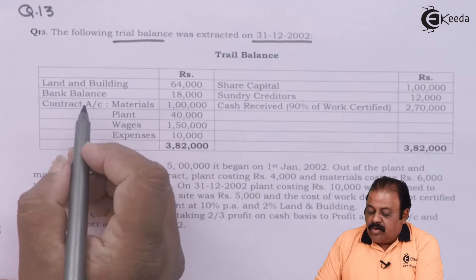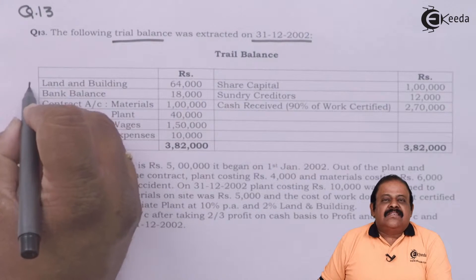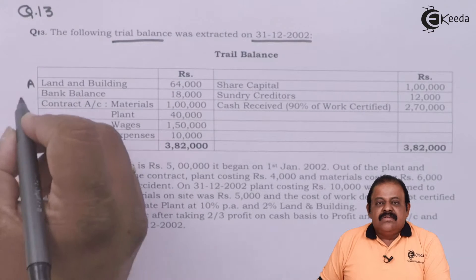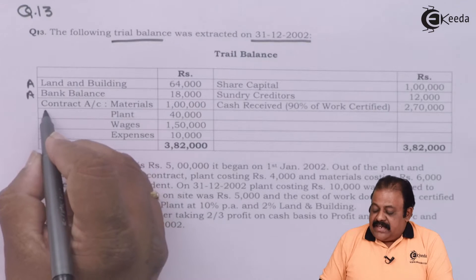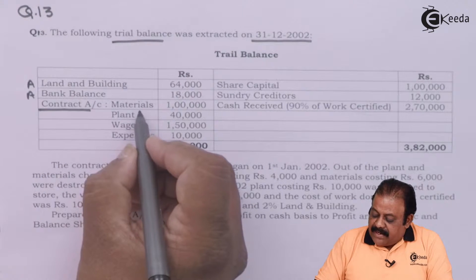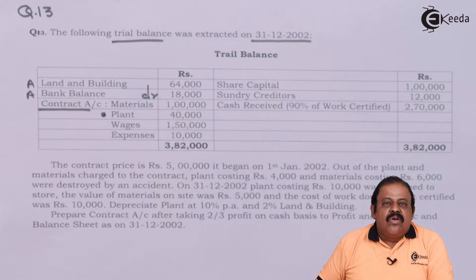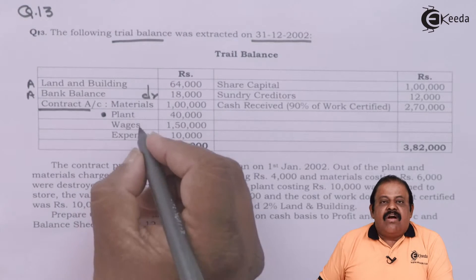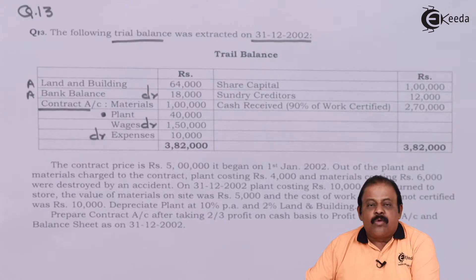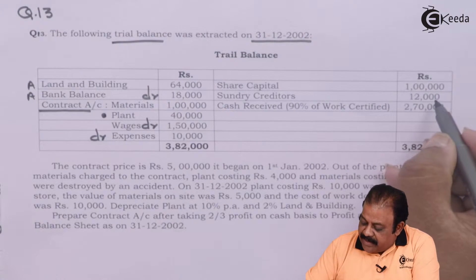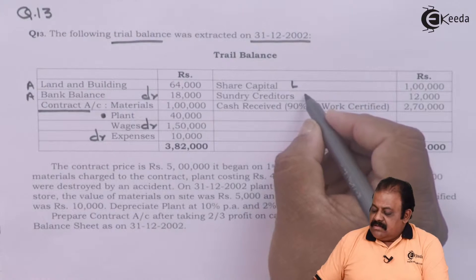Land and building 64,000 is an asset and will appear on the asset side of the balance sheet. Bank balance will also appear as an asset. Then we have relevant details of contract account expenses: material issued to contract, plant (on which we need to consider depreciation and debit to contract account), wages, and other contract expenses. Share capital of rupees 1 lakh is a liability, recorded on the liability side. Sundry creditors are also liabilities.